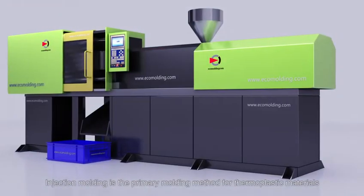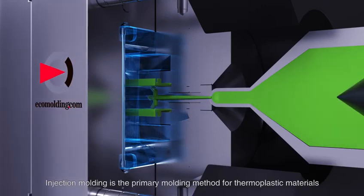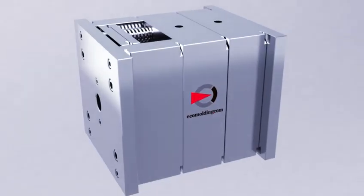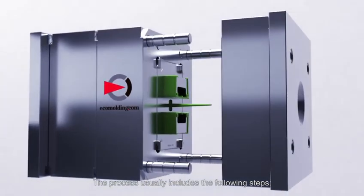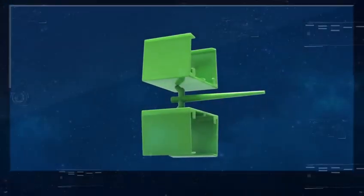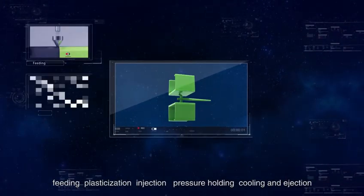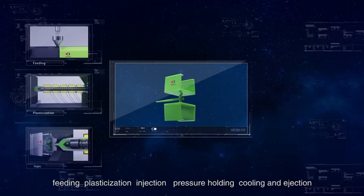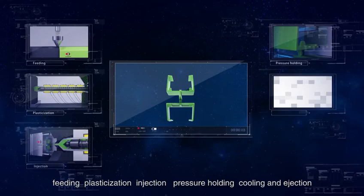Injection molding is the primary molding method for thermoplastic materials. The process usually includes the following steps: feeding, plasticization, injection, pressure holding, cooling, and ejection.